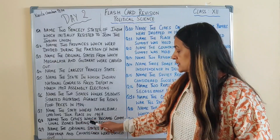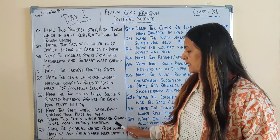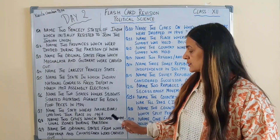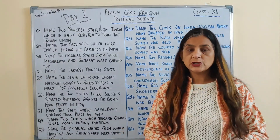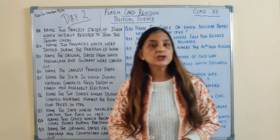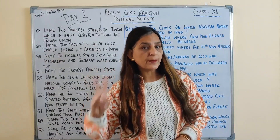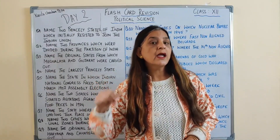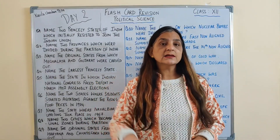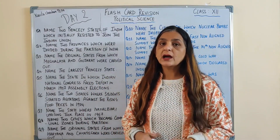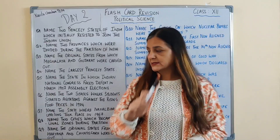Name two cities which became communal zones during partition. Partition ke time pe 2 cities thi jo communal zone bani, and the answer is Kolkata and Amritsar.